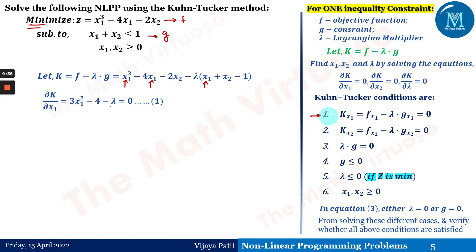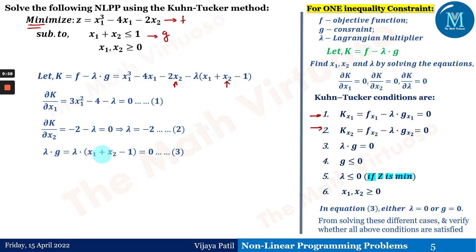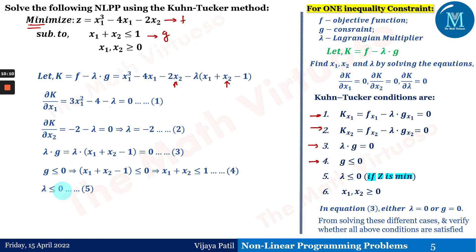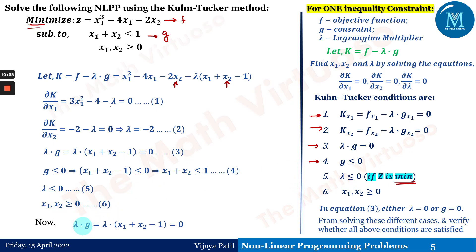Differentiating K with respect to x₂: the terms with x₂ give −2 − λ = 0, so λ = −2. That is the second condition. The third condition is λ·g = 0. The fourth is g ≤ 0, i.e., x₁ + x₂ ≤ 1. The fifth condition is λ ≤ 0 — note that for minimization we take λ ≤ 0, unlike maximization where λ ≥ 0. The sixth is x₁, x₂ ≥ 0.